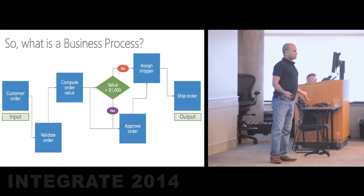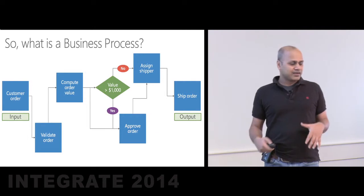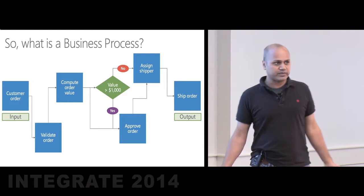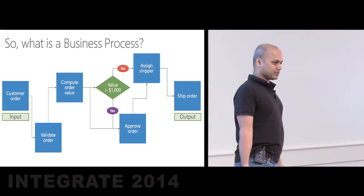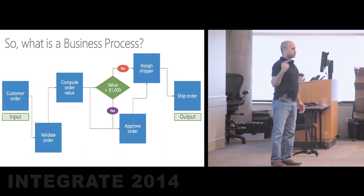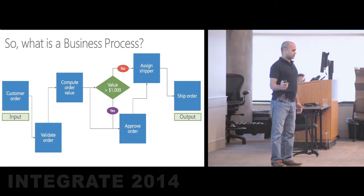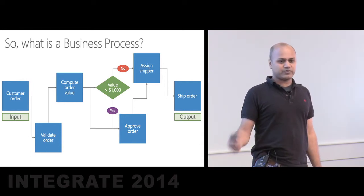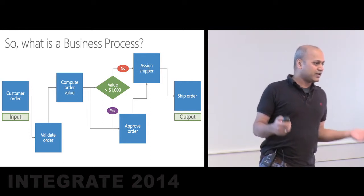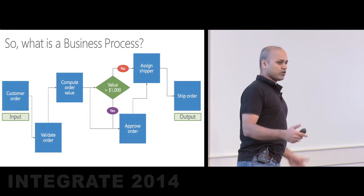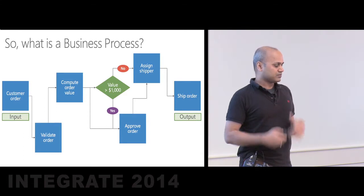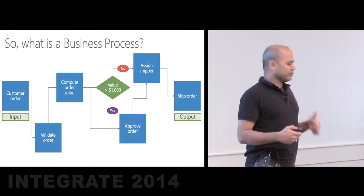In this example, we saw customer data coming in, we validate it, compute the order value, then either approve or auto-approve it, and assign a shipper to ship it out. There is another very important characteristic: at any time, you cannot drop the data you accepted. If you drop the data, there is no business. In case of any error, you want to take the data to a predefined store where it could be retrieved, salvaged, or manually handled.